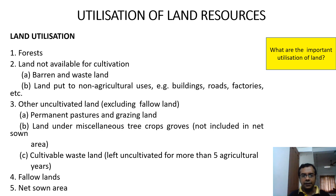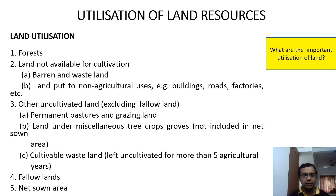The first important question we can expect from this chapter, as far as board exams are concerned, is: what are the important utilizations of land? The first one is the forest. The second one is land which is not available for cultivation — these include barren and wasteland, and land put to non-agricultural uses such as buildings, roads, and factories. The third one is other uncultivated land excluding fallow lands, which includes permanent pastures and grazing land, land under miscellaneous tree crop groves, and cultivable wasteland. The fourth point is fallow lands, and the fifth one is net sown area.